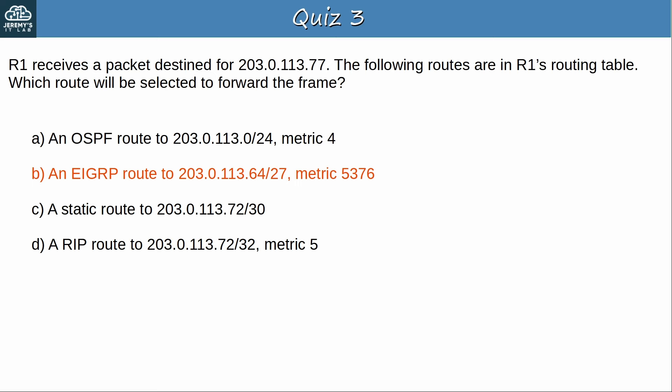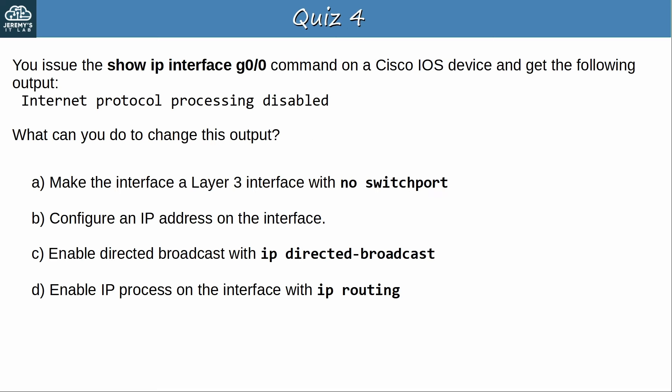Quiz question 4: You issue the command SHOW IP INTERFACE G0/0 on a Cisco IOS device and get the output 'Internet Protocol Processing Disabled.' What can you do to change this output? The answer is B — configure an IP address on the interface. This output is displayed when the interface is a layer 3 interface, such as a router's interface or a routed port on a layer 3 switch, but there is no IP address configured on it, so the router will not process IP packets on that interface. Option A (no switchport) makes a switch interface a routed port but won't fix this. Option C configures directed broadcasts but won't fix this. Option D (IP routing) enables IP routing on a layer 3 switch but also will not affect this output.